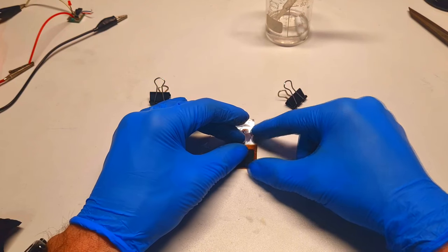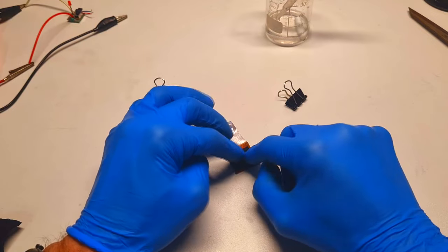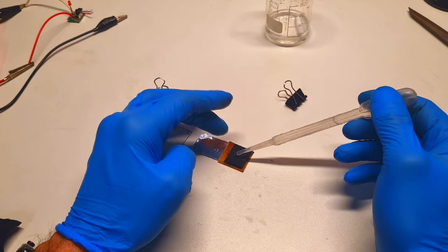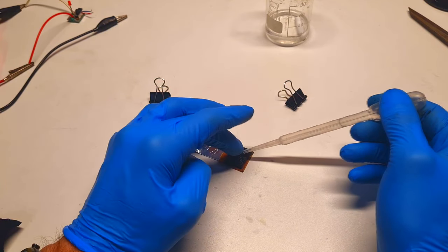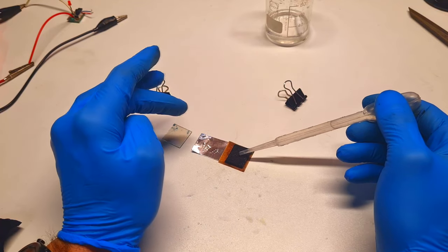So again, I will put this positive active material on the top of this separator. I need to also wet the graphite carbon felt. Like so.